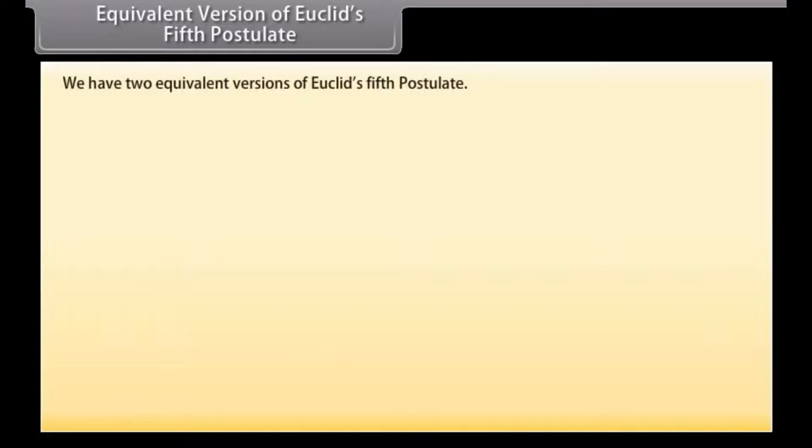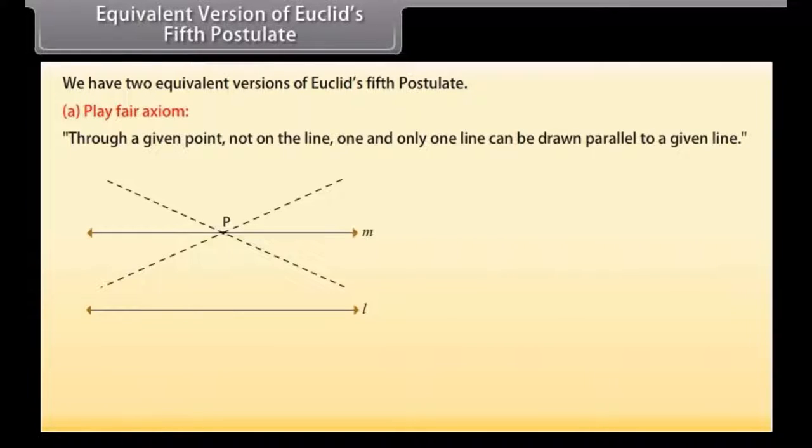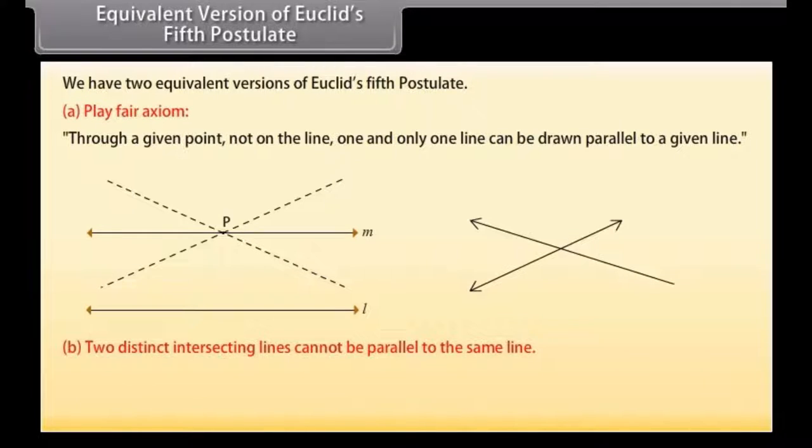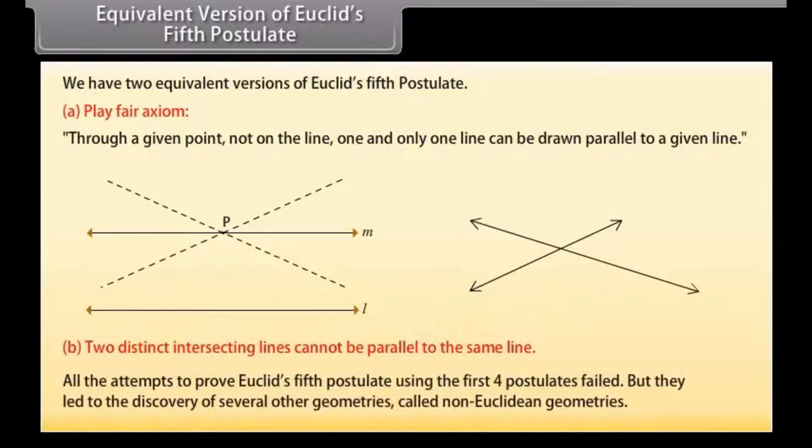Equivalent versions of Euclid's fifth postulate. We have two equivalent versions of Euclid's fifth postulate. The first one is play fair axiom. This says that, through a given point not on the line, one and only one line can be drawn parallel to a given line. And the other one is, two distinct intersecting lines cannot be parallel to the same line. All the attempts to prove Euclid's fifth postulate using the first four postulates failed, but they led to the discovery of several other geometries called non-Euclidean geometries.